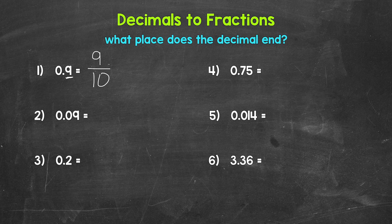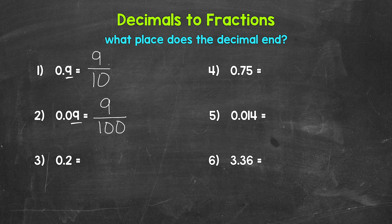Let's move on to number two, where we have 0.09 — nine-hundredths. This looks similar to number one. We have a nine on the right side of the decimal, but that decimal ends in the hundredths place, so our denominator is going to be 100. So nine over 100, nine-hundredths. The only common factor between nine and 100 is one, so this is in simplest form.